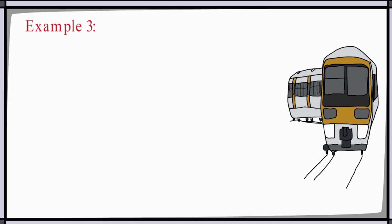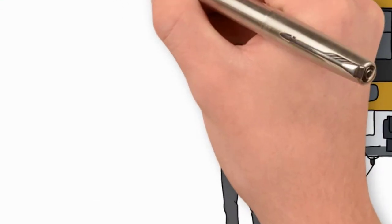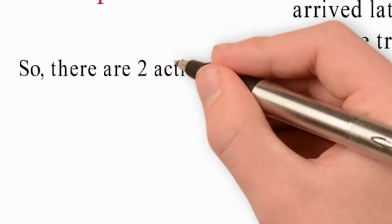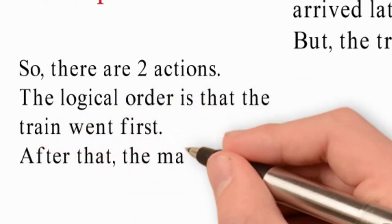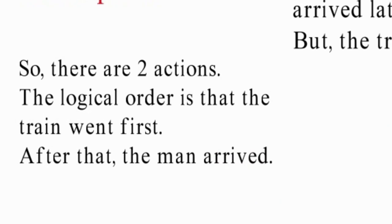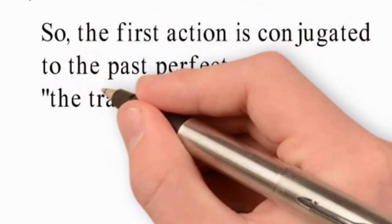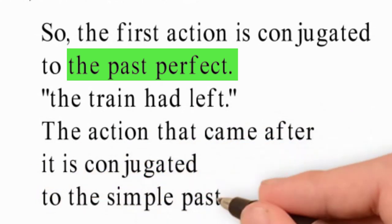In Example 3, this man arrived late to the station, but the train had left. So there are two actions. The logical order is that the train went first. After that, the man arrived. So the first action is conjugated to the past perfect simple: the train had left. The action that came after it is conjugated to the simple past: arrived.